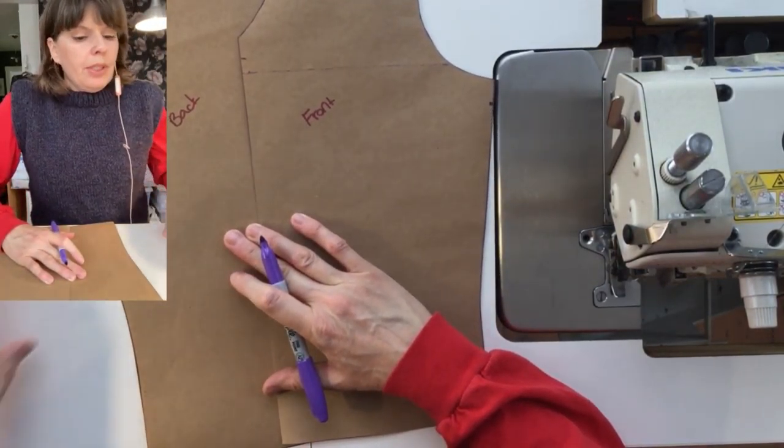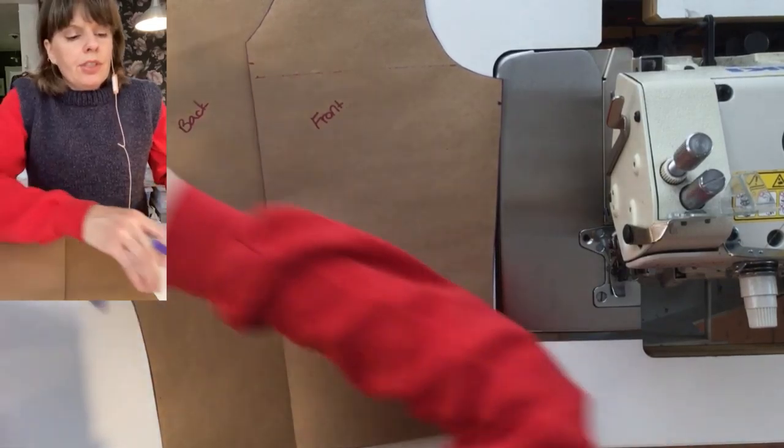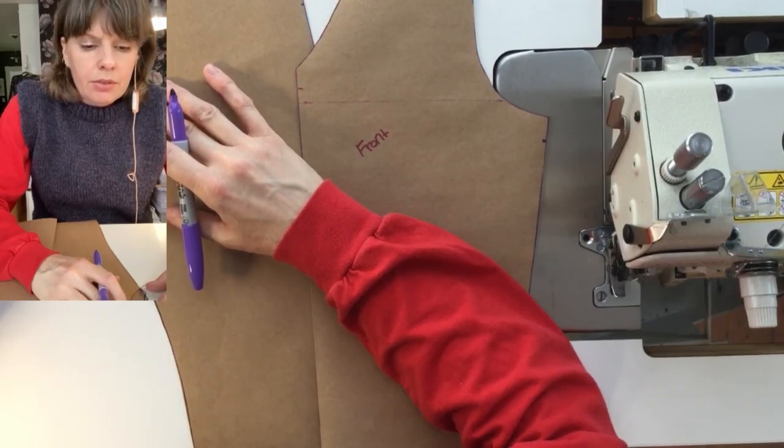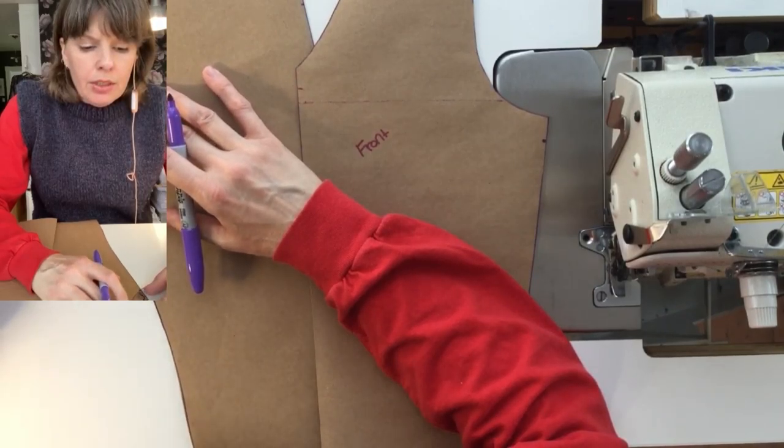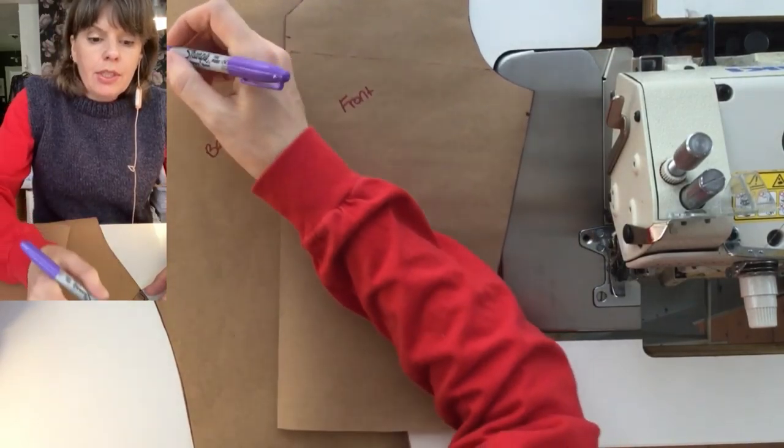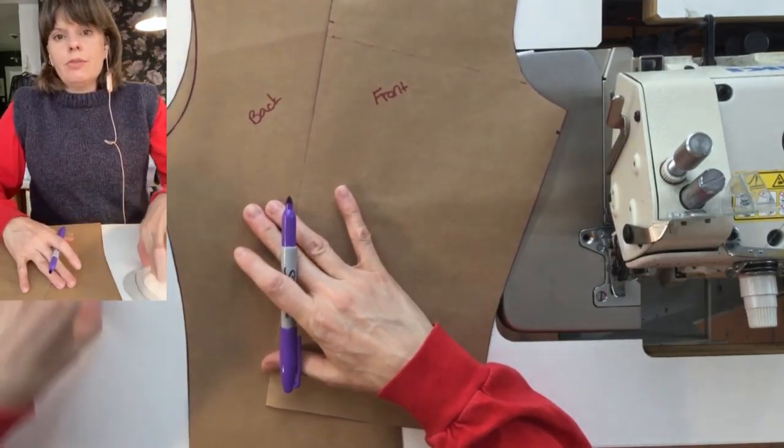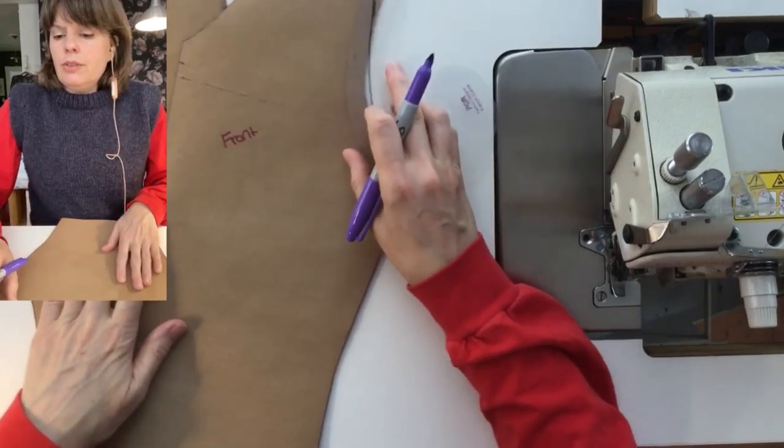You can probably print out a French curve from the internet. I can look for a link later but that would do the job if you wanted to do this yourself and you didn't have a French curve. But basically you're just drawing a new curve. So I would do that front and back.